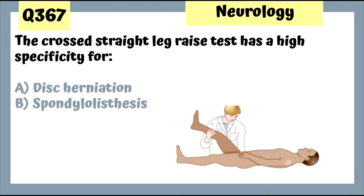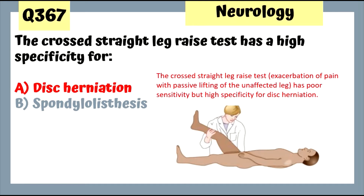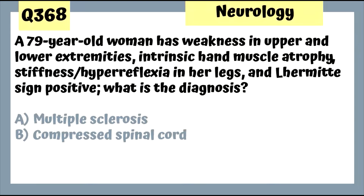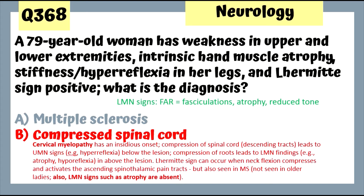Question 367: The crossed straight leg test has high specificity for disc herniation. Exacerbation of pain with positive lifting of the unaffected leg has poor sensitivity but high specificity for disc herniation. Don't confuse this with the Kernig sign for meningitis. Question 368: A 79-year-old woman with weakness in upper and lower extremities, intrinsic hand muscle atrophy, leg stiffness with hyperreflexia, and positive Lhermitte sign — this is a compressed spinal cord, cervical myelopathy. Lower motor neuron signs: fasciculations, atrophy, and reduced tone (FAR).